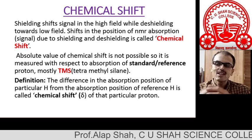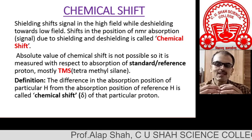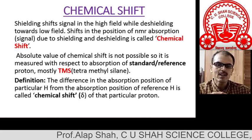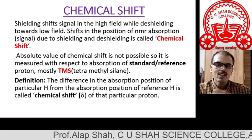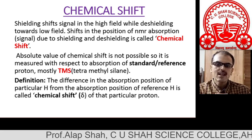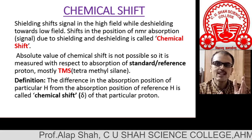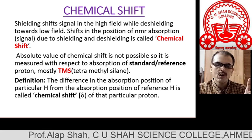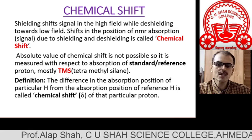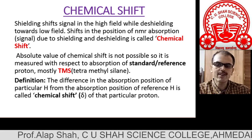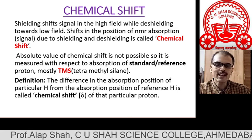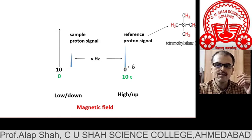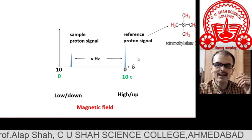Similarly here, TMS is used as a standard or reference proton. The definition of chemical shift is: the difference in the position of a particular proton from the absorption position of the reference proton — that is called chemical shift delta. This scale is called the delta scale.